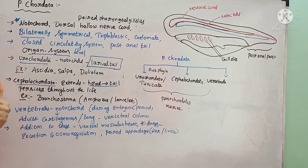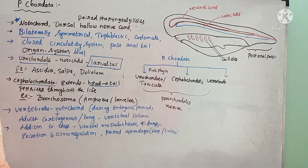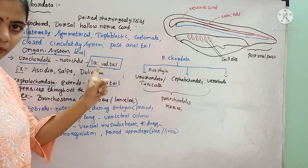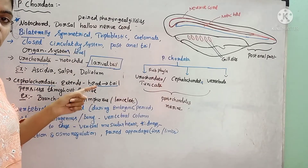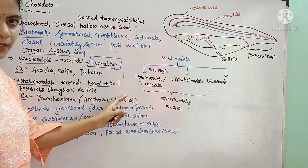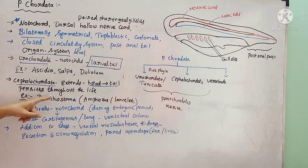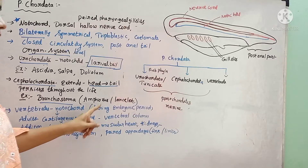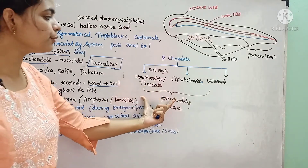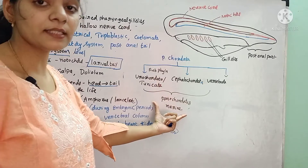Another subphylum is Cephalochordata. In Cephalochordata, the notochord extends from head to tail — unlike Urochordata where it is only in the larval tail region. In Cephalochordata, the notochord persists throughout the life of the animal, including adult stages. Examples for Cephalochordata are Branchiostoma, formerly called Amphioxus or Lancelet.